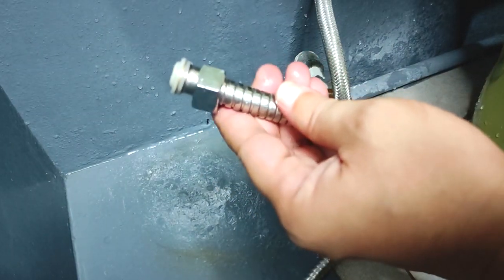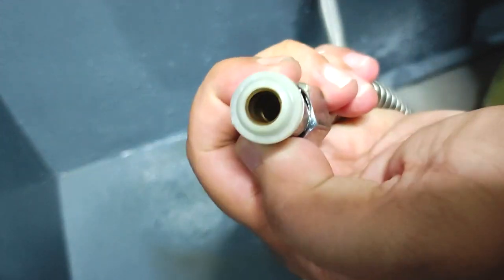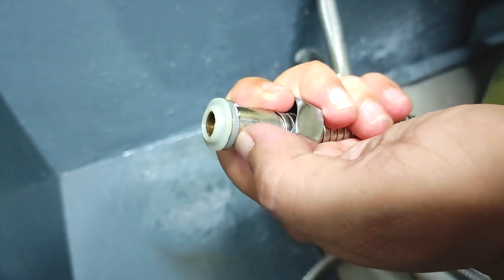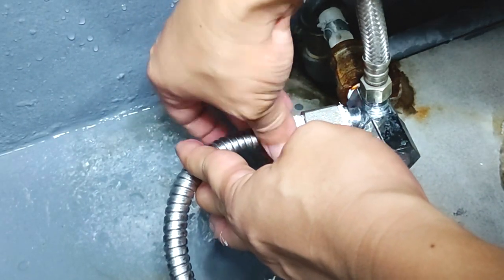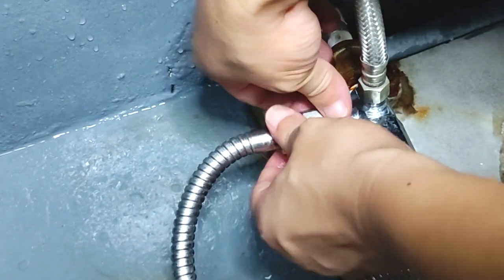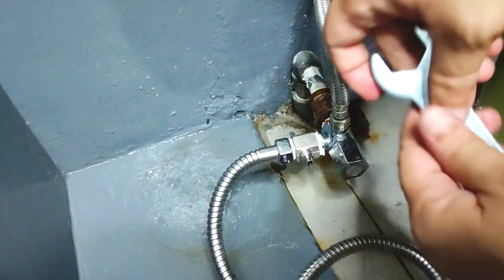Now we can reconnect our bidet spray flexible hose. So basically the metal adapter is now in between the water inlet valve and the flexible hose of our bidet spray.